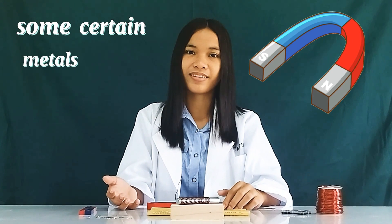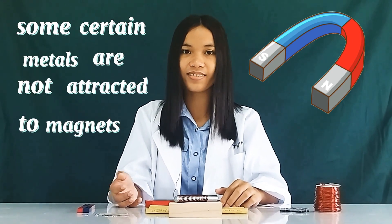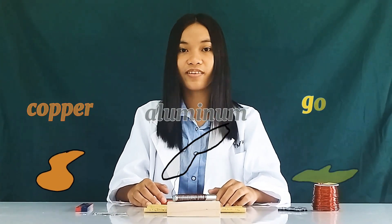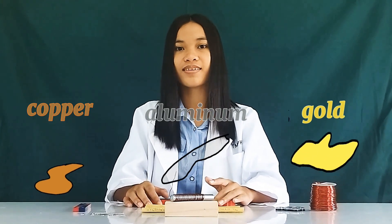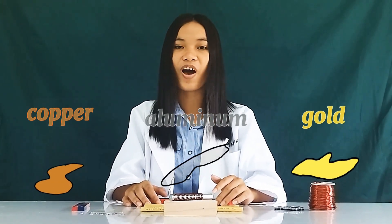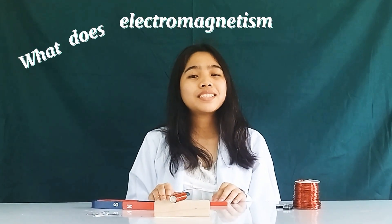Let's start by talking about magnets. Some certain metals are not attracted to magnets. Metals like copper, aluminum, and gold never interact with magnets. But what does electromagnetism really mean? Well, electromagnetism is simply the interaction between electricity and magnetism.